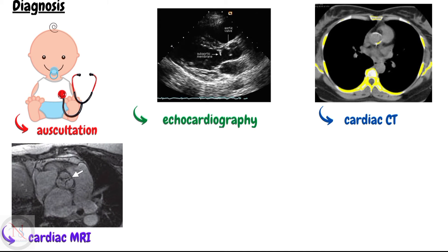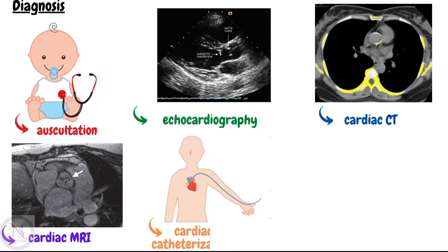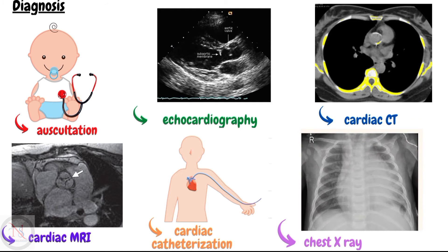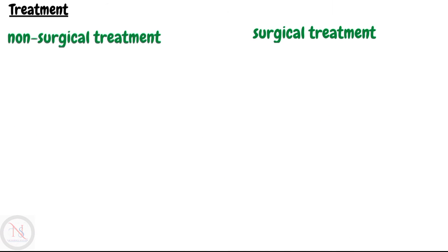Cardiac MRI shows the size of the aorta and determines the severity of aortic stenosis. Cardiac catheterization is not often used to diagnose aortic valve disease, but it may be used if other tests are not able to diagnose the condition or to determine its severity. Chest X-ray can determine if the heart is enlarged, which can occur in aortic stenosis.